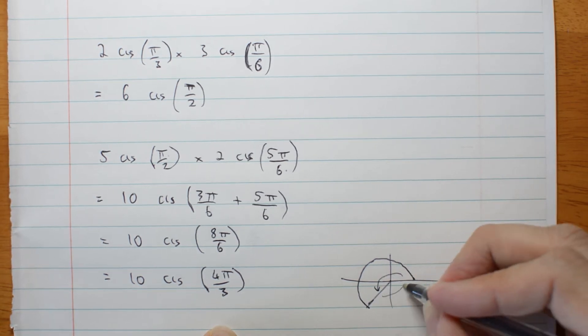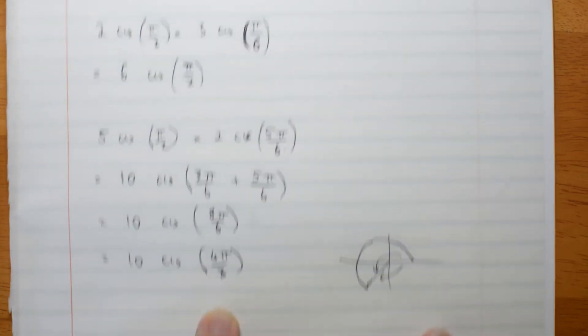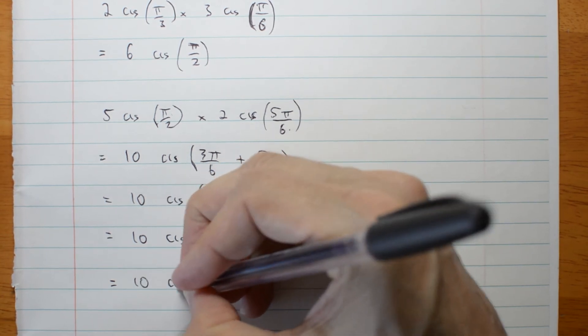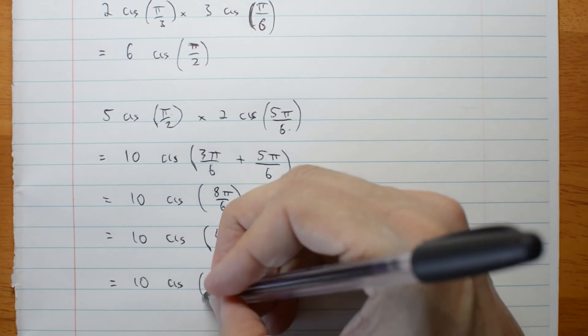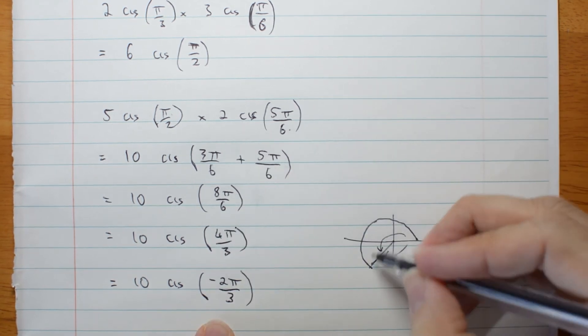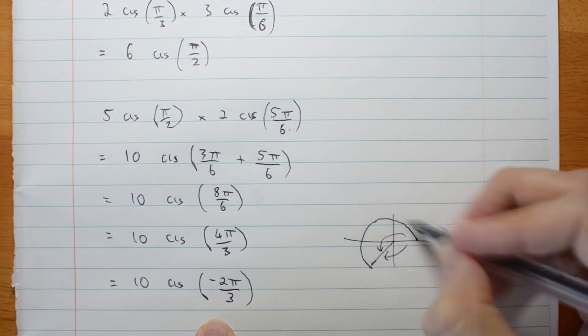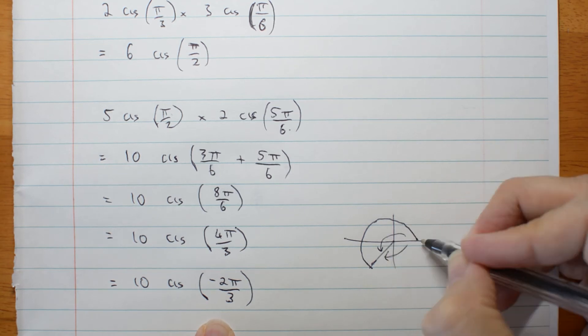So I want to give this angle instead, which is negative 2π/3. By convention, give the principal argument within π to negative π from 0.